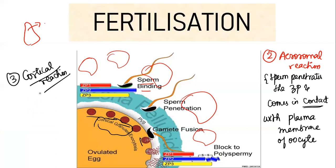The moment the sperm touches the plasma membrane of the oocyte, these cortical granules get activated and the next event that happens is the cortical reaction — the release of the contents of the cortical granules from the oocyte, stimulated by the contact of sperm with the plasma membrane. So the three reactions are: first, capacitation; second, acrosomal reaction; third, cortical reaction. After the cortical reaction, the sperm is allowed to enter into the oocyte.